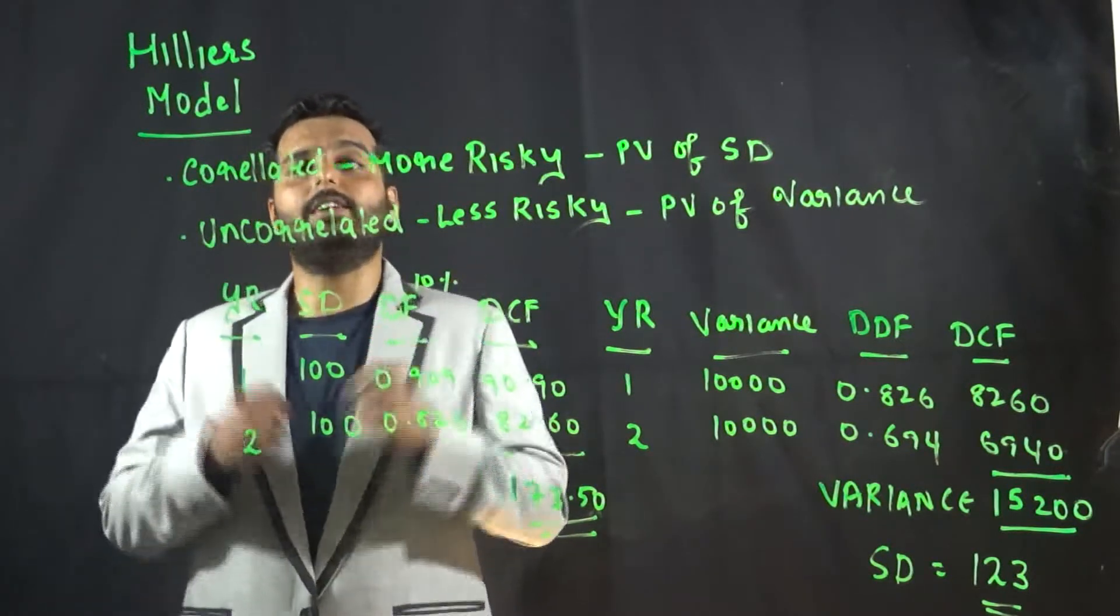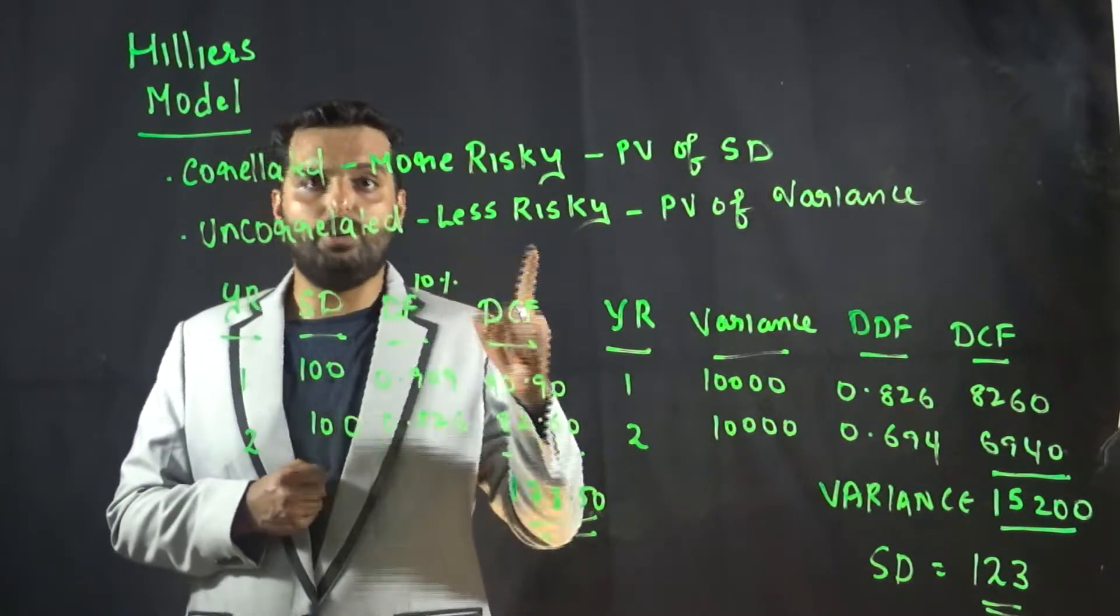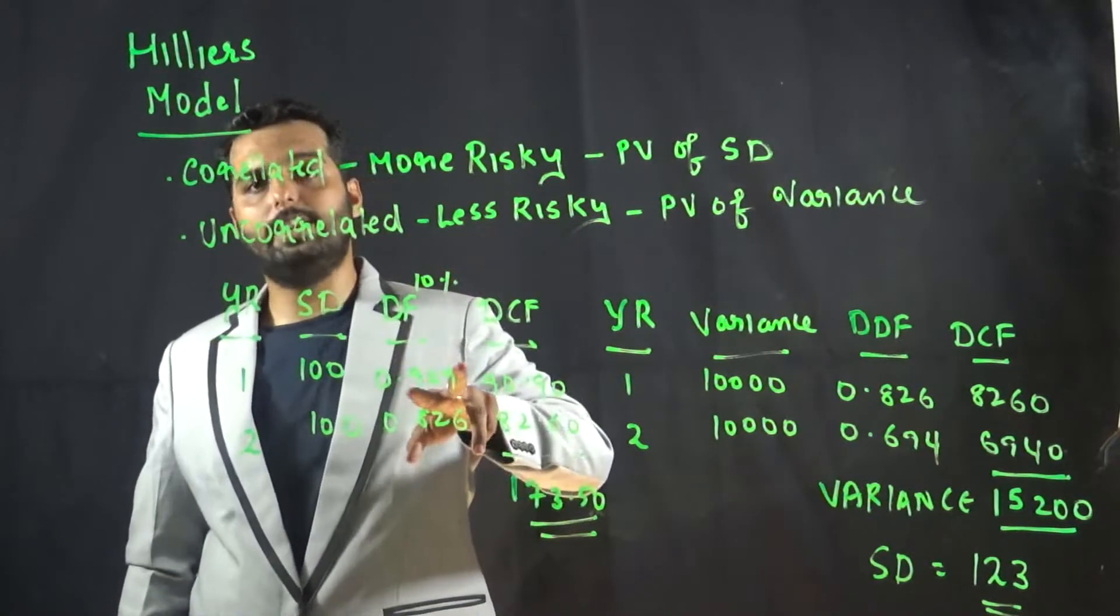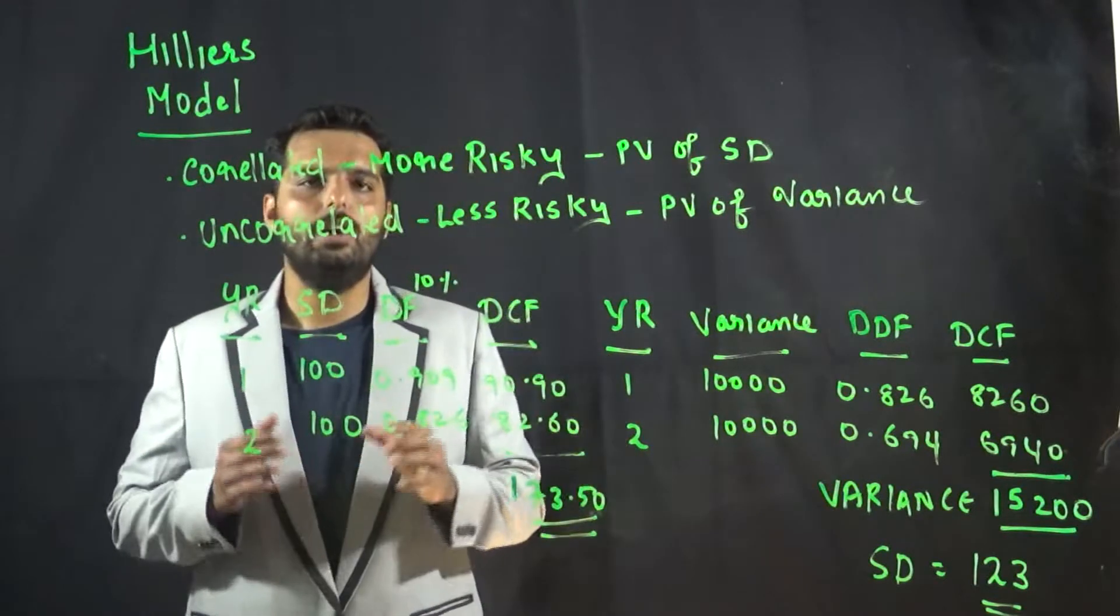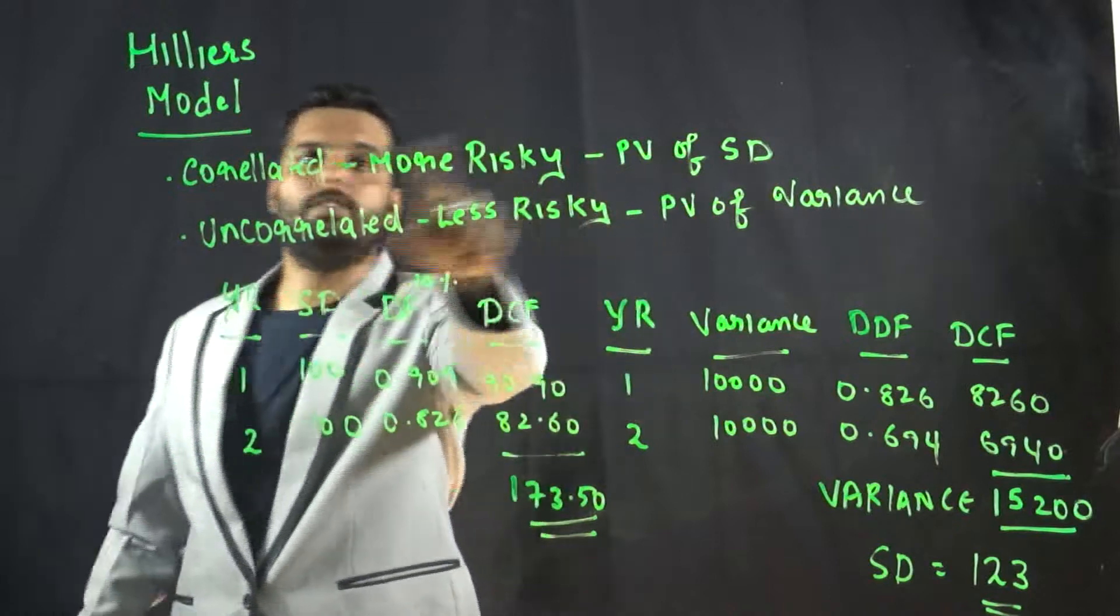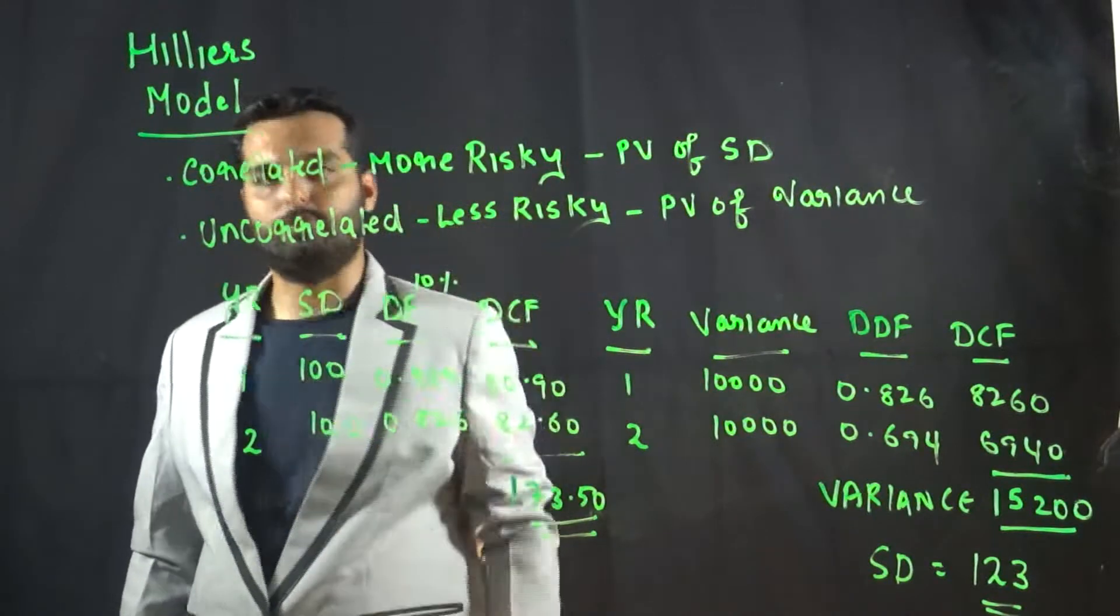So here he says that to find the combined standard deviation, first we have to check whether the cash flows are correlated or uncorrelated. If the cash flows are correlated, then it is said to be more risky compared to uncorrelated cash flows.